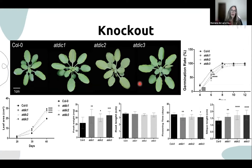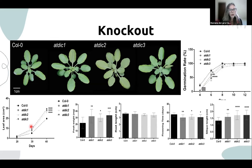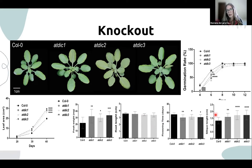The knockout lines showed a decrease in germination, but an increase in leaf area and above-ground biomass accumulation. No alterations were detected in root length. An early flowering time and an increase in silique length were observed, suggesting an impact on reproductive development.